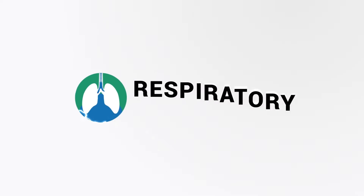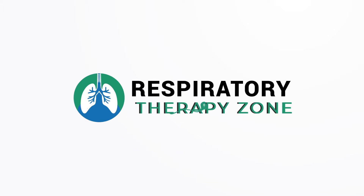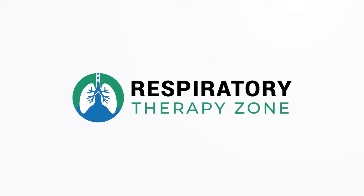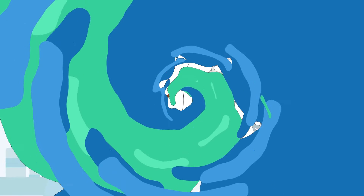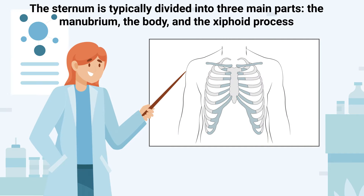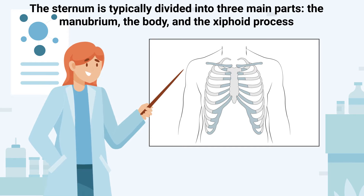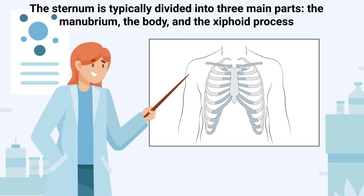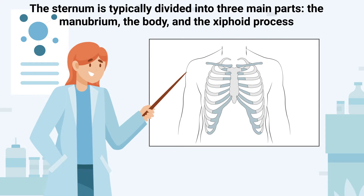So if you're ready, let's get into it. The sternum is typically divided into three main parts: the manubrium, the body, and the xiphoid process.